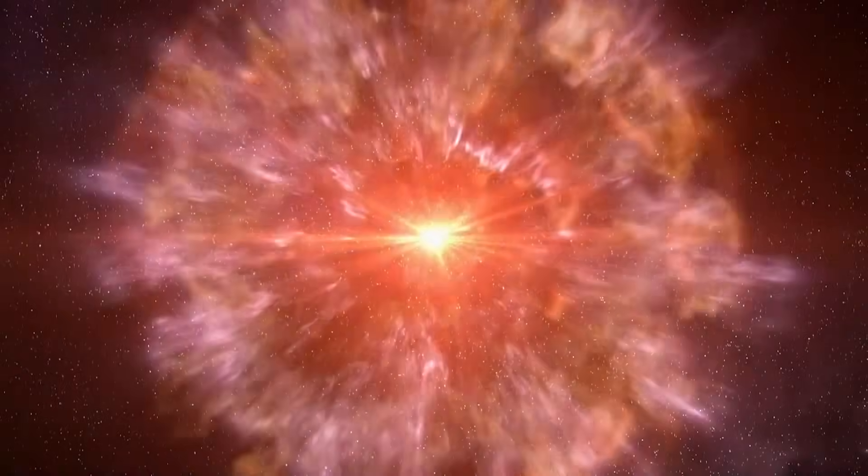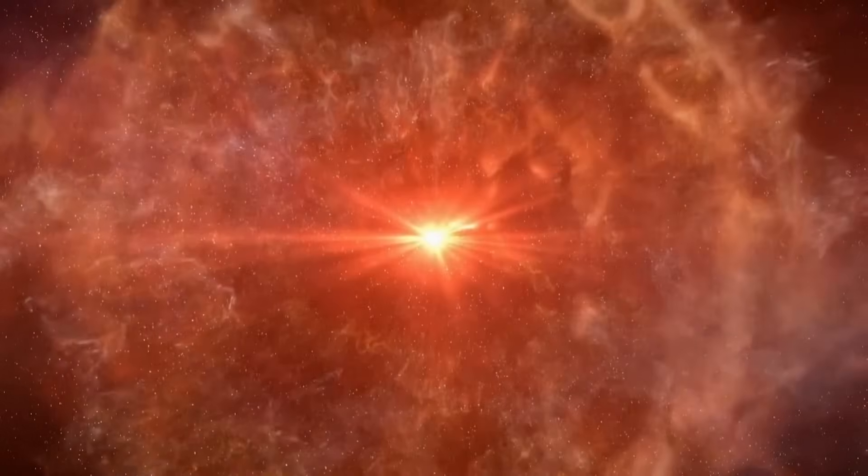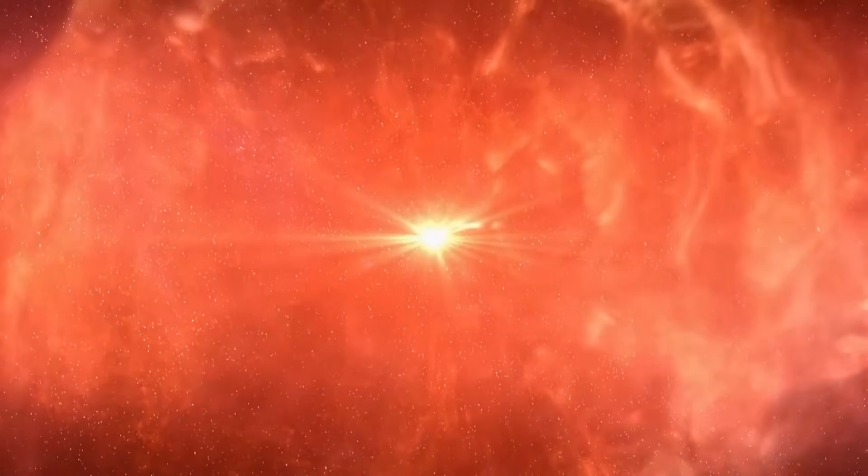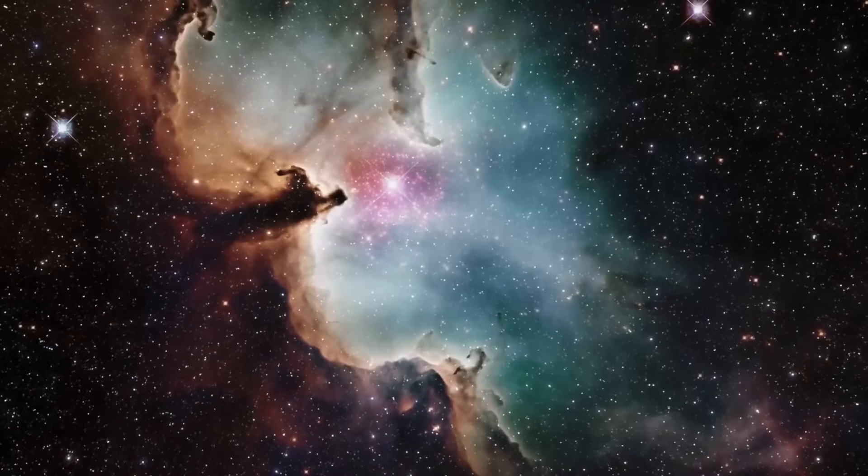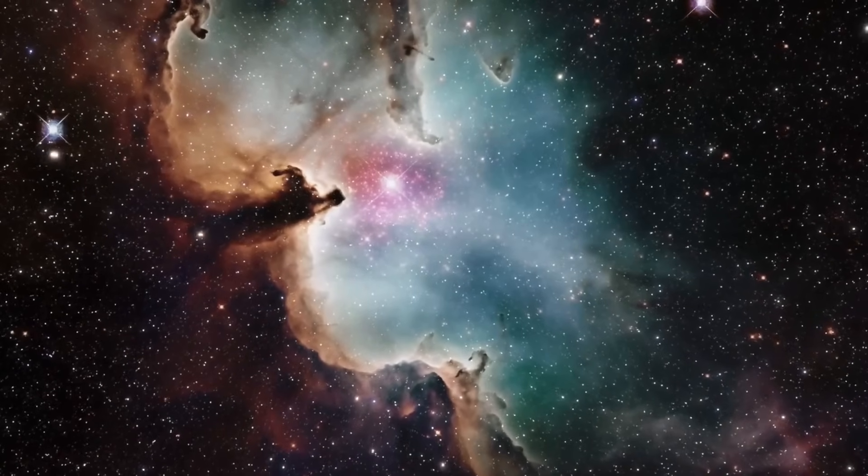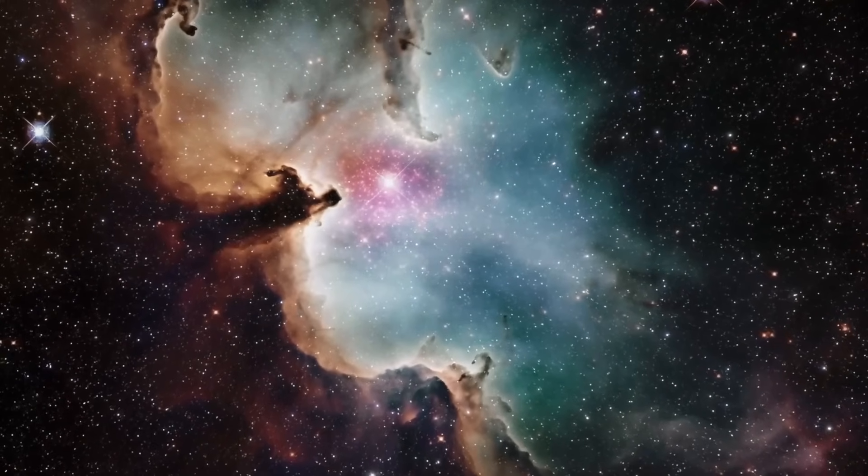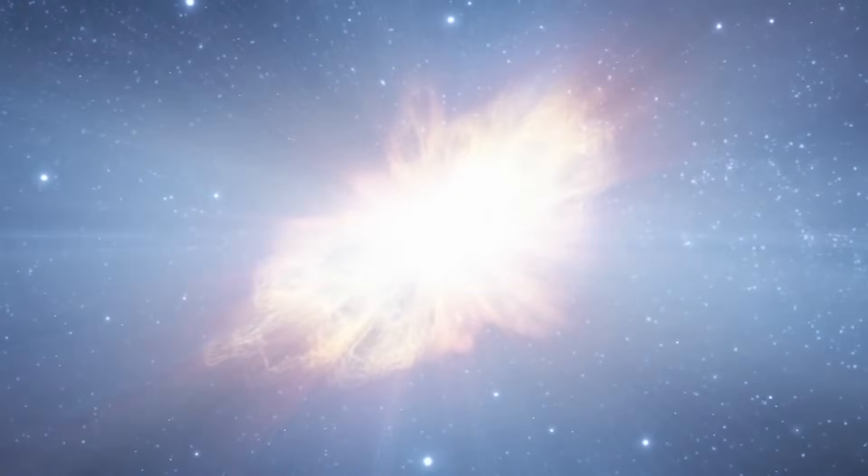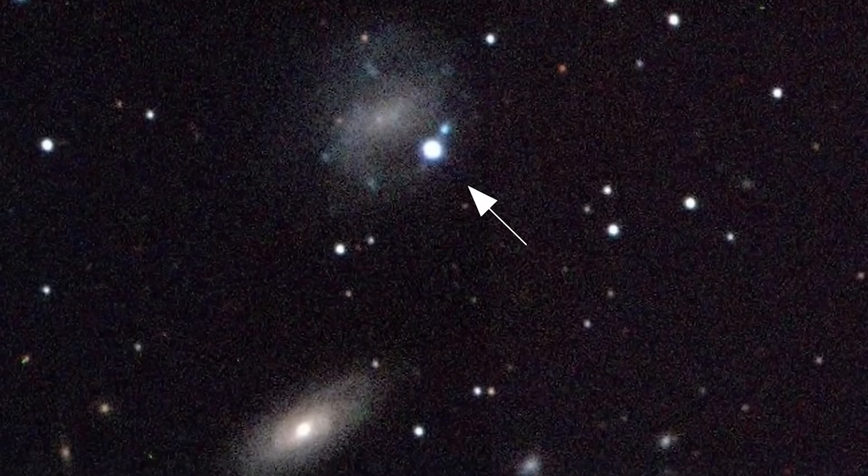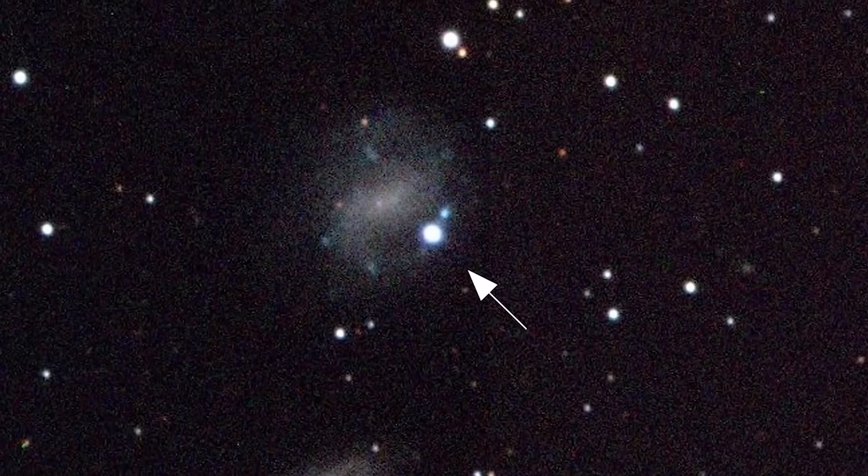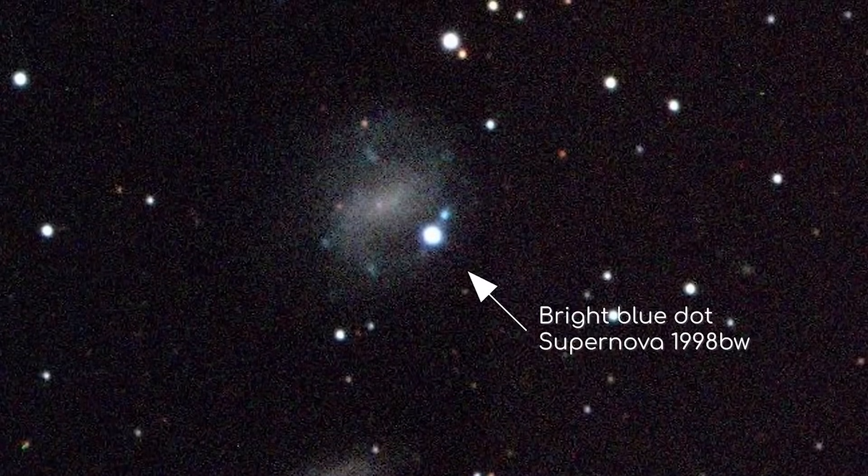Recent data points to another interesting twist. Betelgeuse has been losing mass at an unprecedented rate. What we're witnessing is a celestial striptease of sorts, as the star sheds layers of dust and gas, suggesting a rapid depletion of fuel. Is this shedding a prelude to the anticipated supernova event? And does this mean our countdown to the celestial spectacle is shorter than we initially estimated?